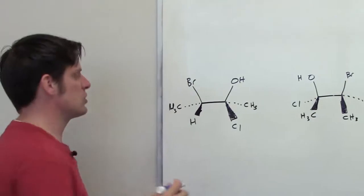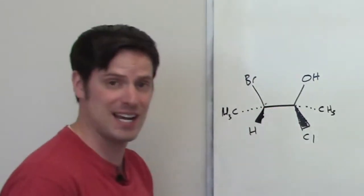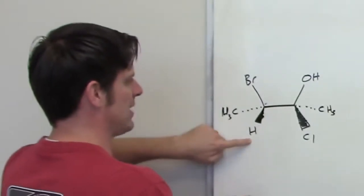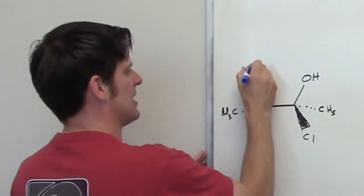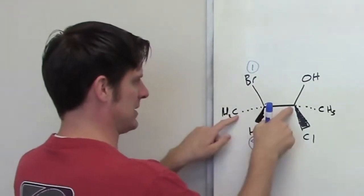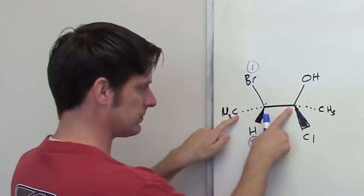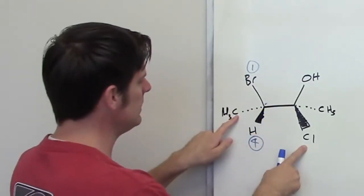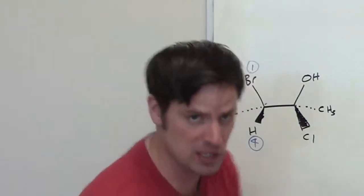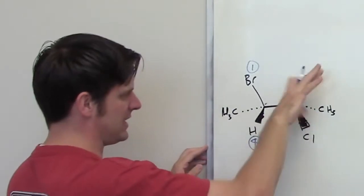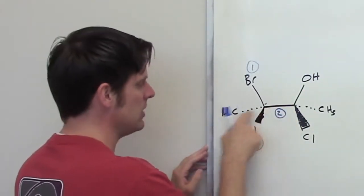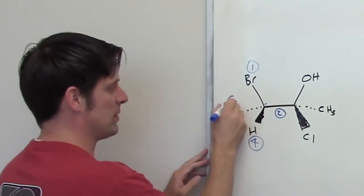So let's go ahead and do this. We're going to look at this stereocenter right here, prioritizing each of the four groups around it. It's got a bromine, a carbon, a hydrogen, and a carbon. Bromine has the highest atomic number and is hence group number one. Hydrogen is group number four. Carbon and carbon tie, so I go out to break the tie. This carbon is bound to chlorine; this carbon is bound to hydrogen. Chlorine has a higher atomic number than hydrogen, which means this whole branch over here is priority group number two with respect to this stereocenter, while this methyl group is priority group number three.